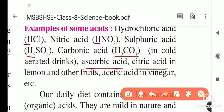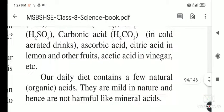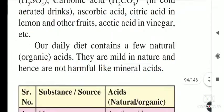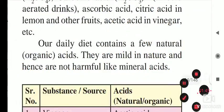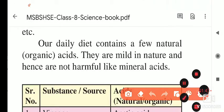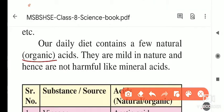Ascorbic acid is present in lemons and other foods. Citric acid is also present in such foods. Acetic acid is present in vinegar. These are some examples of acids in our daily life. Our daily diet contains a few natural or organic acids; they are mild in nature.